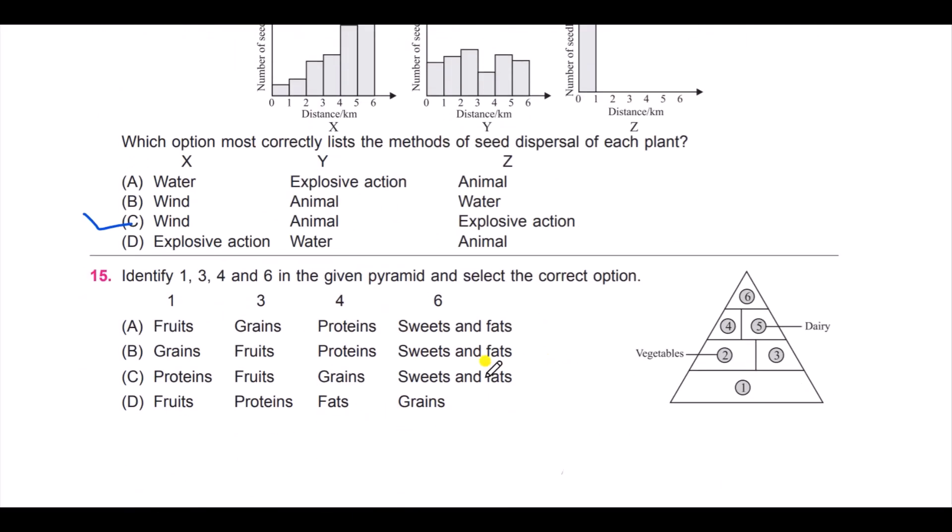Last question for today: identify one, three, four, and six in the given pyramid and select the correct option. This is basically a food pyramid, children. You need to identify here one, three, four, and six. Five and two are already given—that is dairy and vegetables. Option A: fruits, grains, proteins, sweets and fats; B: grains, fruits, proteins, sweets and fats;